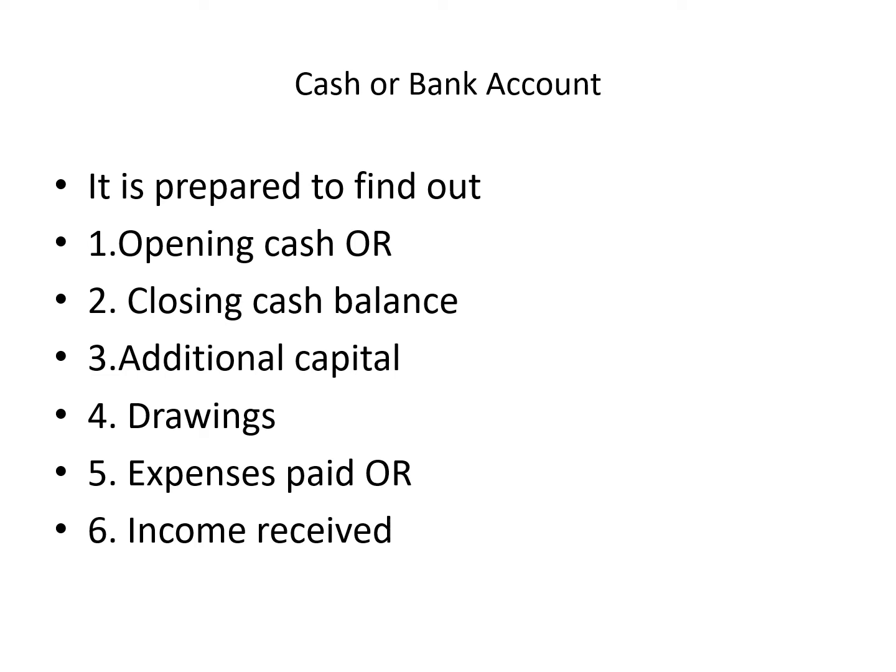The cash or bank account is prepared to find out opening cash, closing cash, additional capital, drawings, expenses paid, or income received. The cash or bank account is a real account that shows the total receipts and payments during the year and the resulting closing balance. This account is prepared to find out missing items such as opening cash or bank balance, closing cash or bank balance, amount received, amount paid to creditors against BP, or even cash sales and cash purchases.